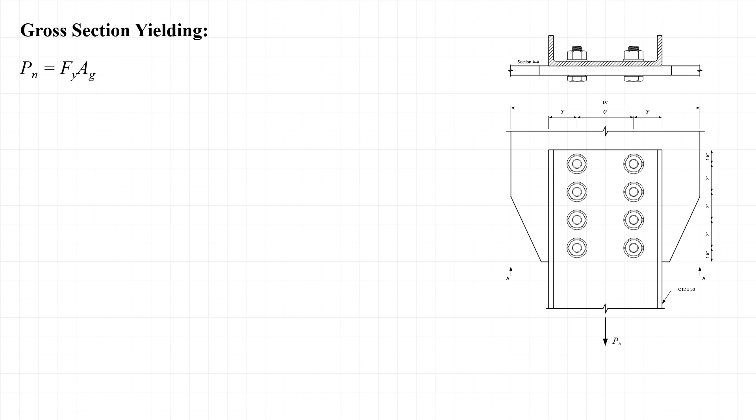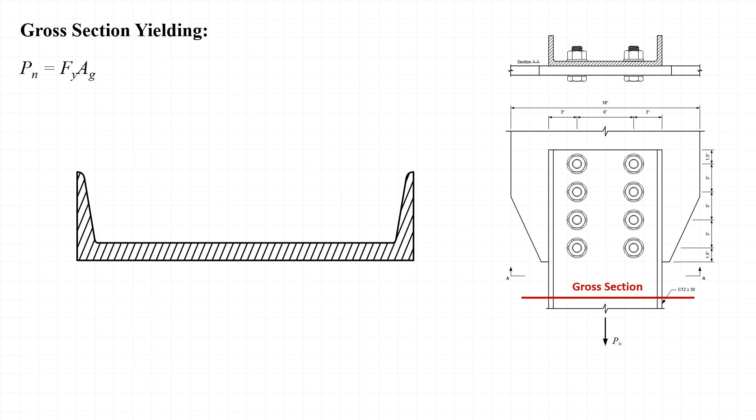The first limit state we'll consider is gross section yielding, or tensile yielding as it's known in the AISC specification, where the nominal strength P sub n is equal to f sub y times A sub g — the yield stress times the gross area. Gross section yielding is evaluated at a cross-section sufficiently far away from the connection to ensure a uniform distribution of stress. Substituting f sub y equals 36 KSI and the gross area A sub g equal to 8.81 inches squared, the nominal strength is equal to 317.2 kips.